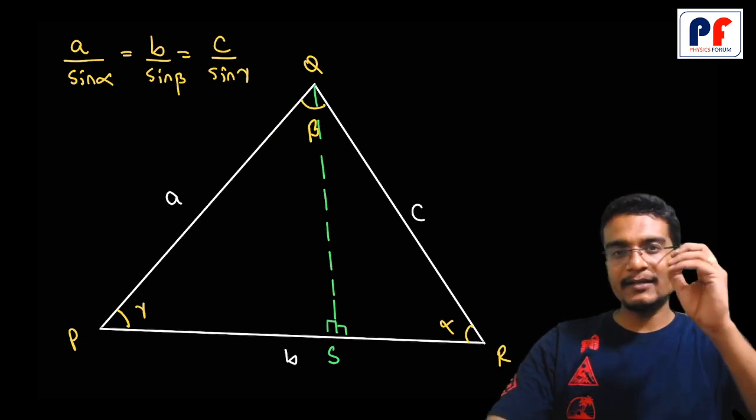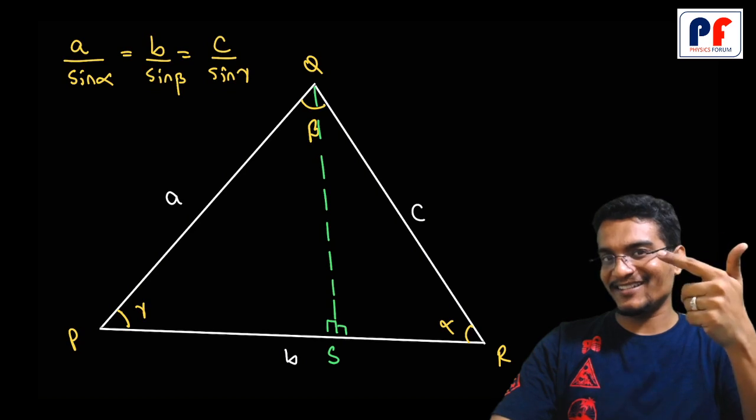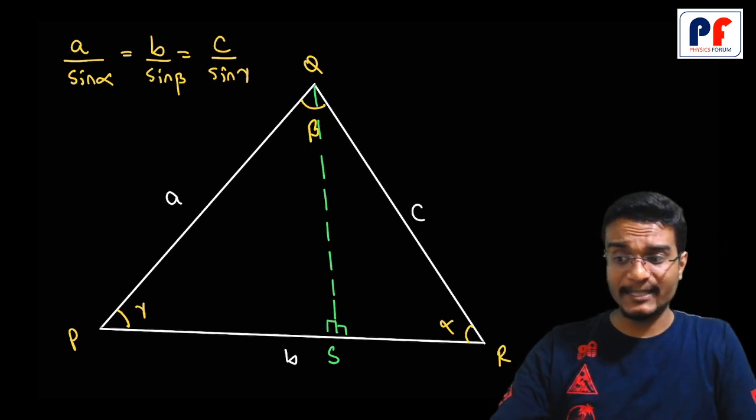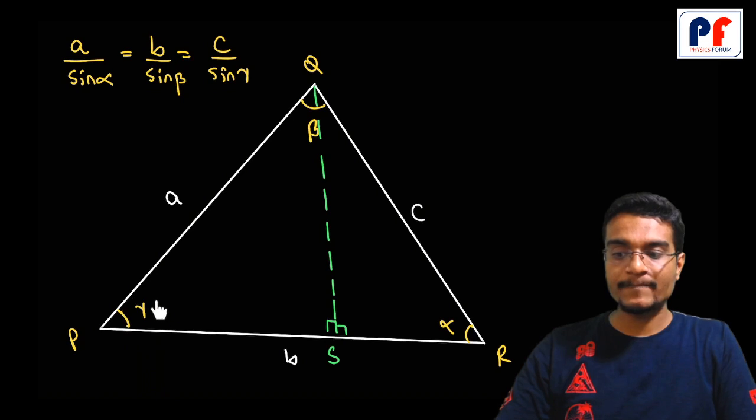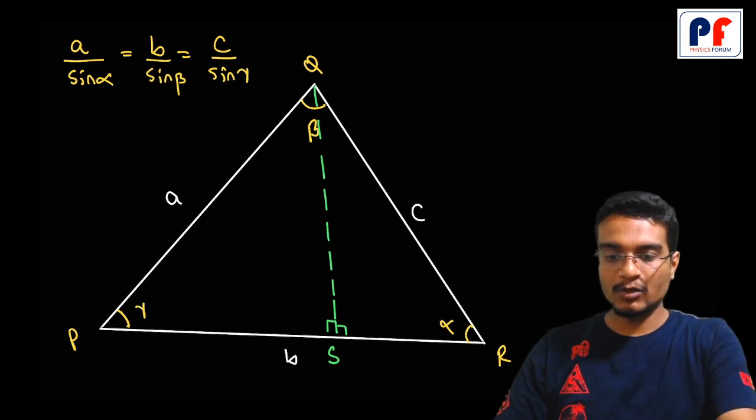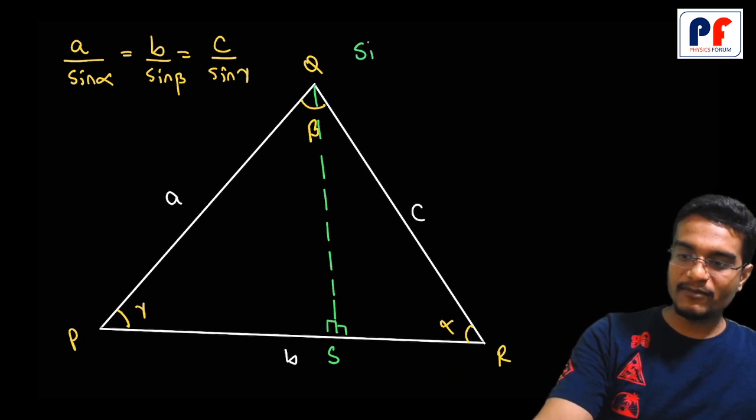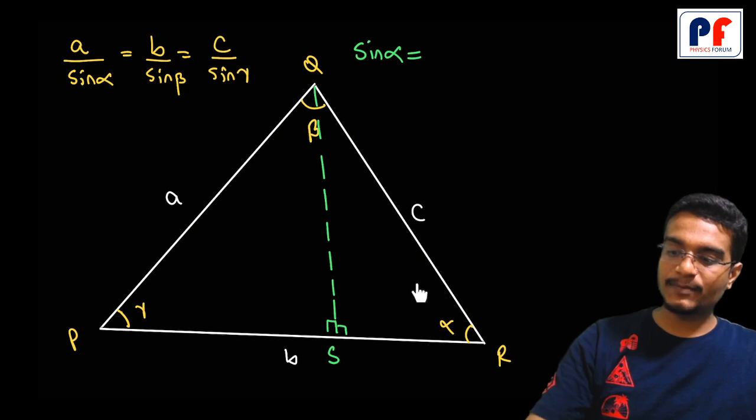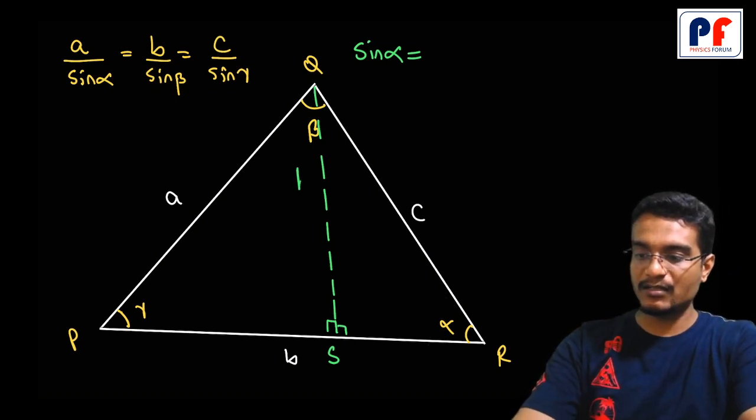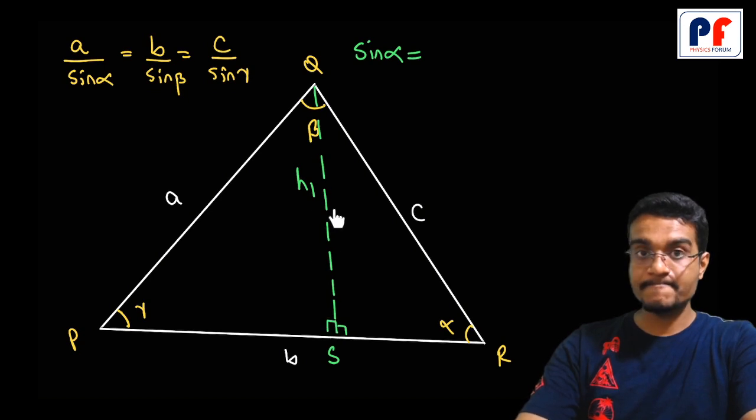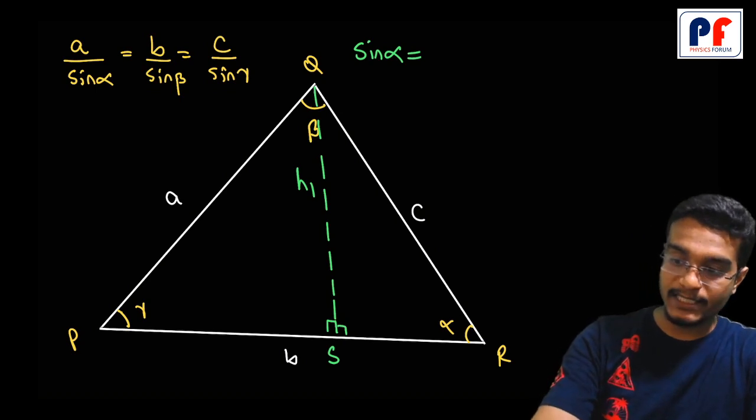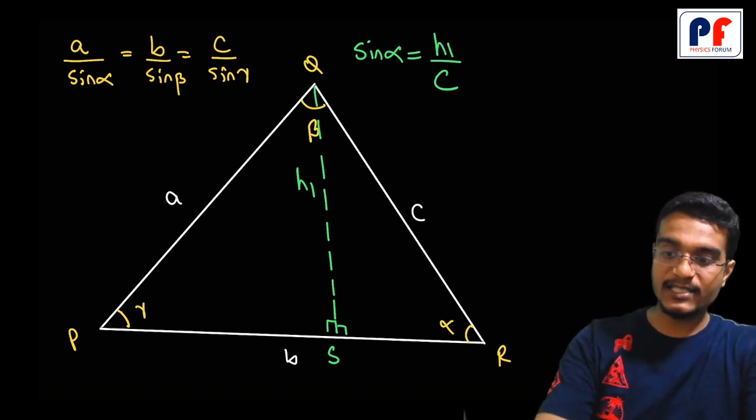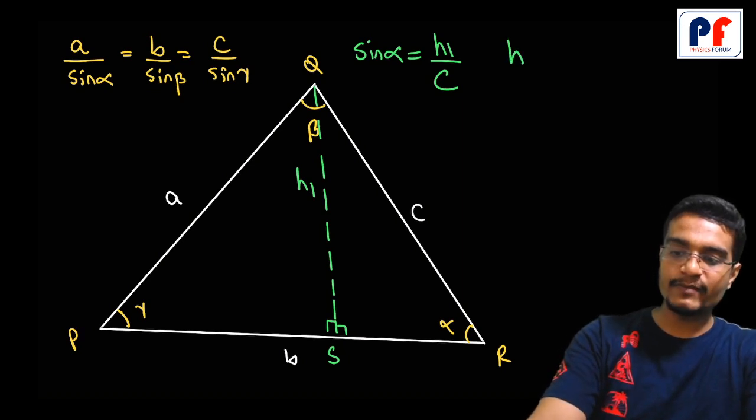Now we have two right angle triangles. We need to find sine gamma and sine alpha. Let us find sine alpha first. Sine alpha equals opposite (h1) upon hypotenuse C. Therefore, h1 = C sine alpha.